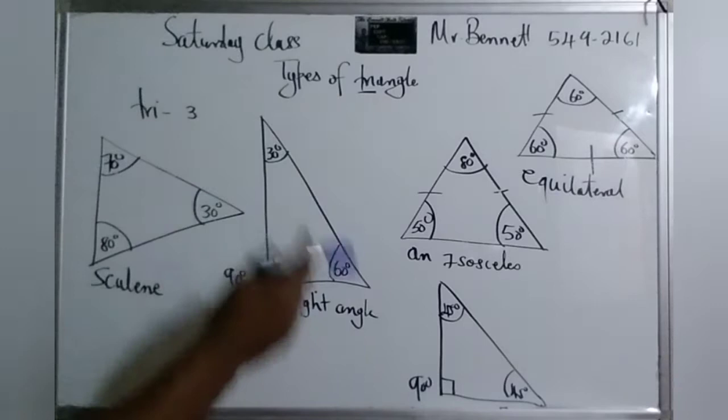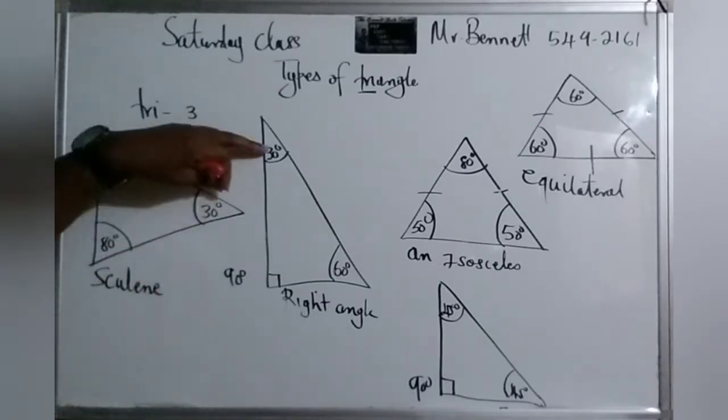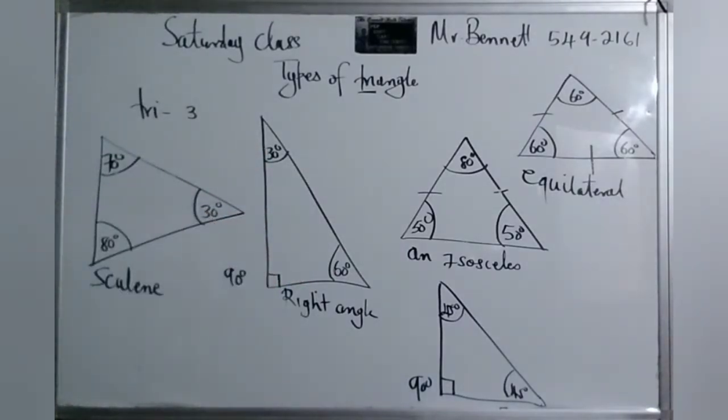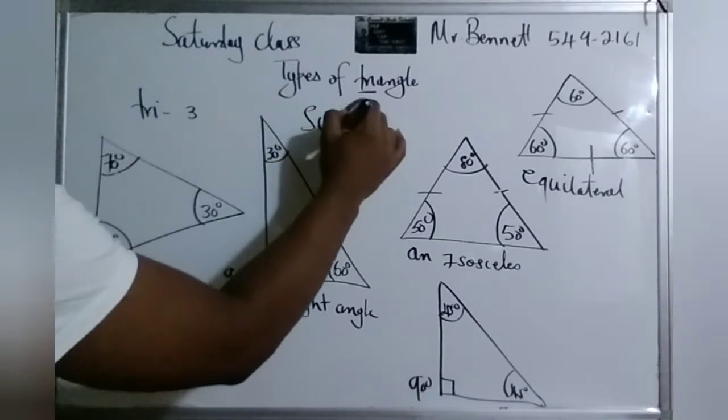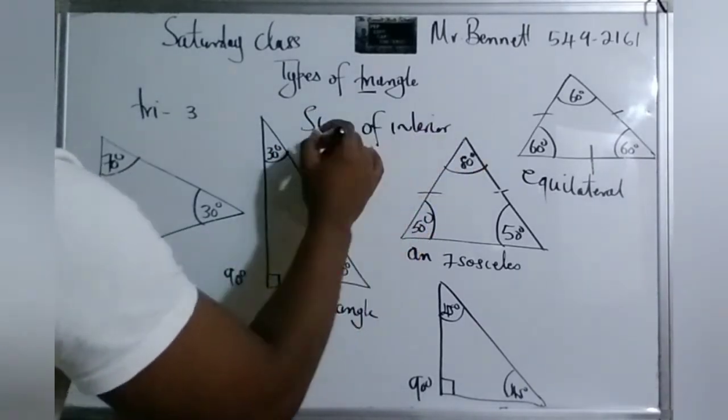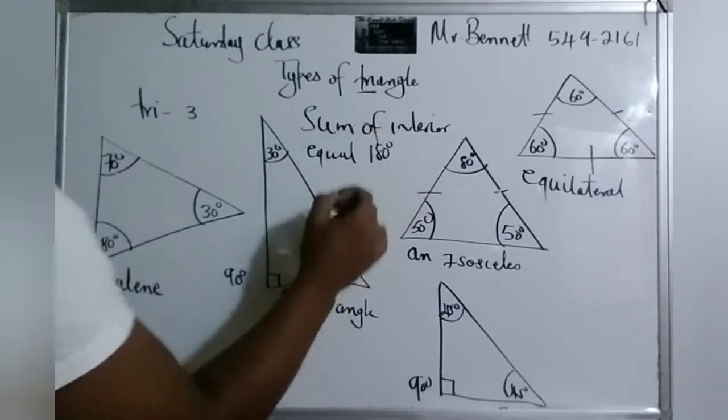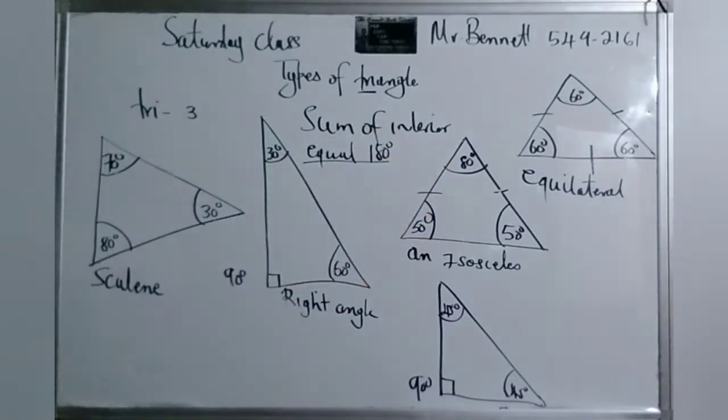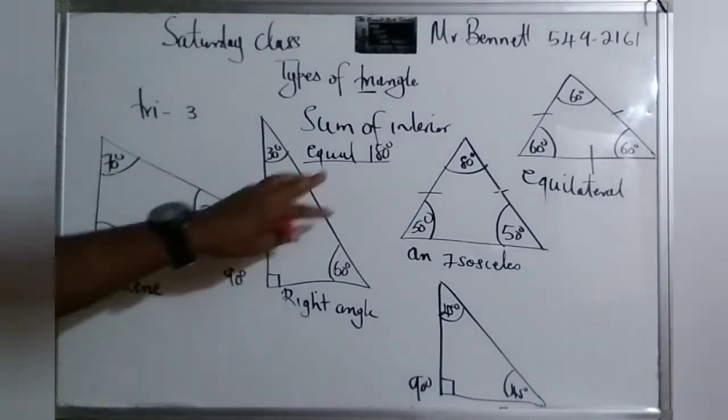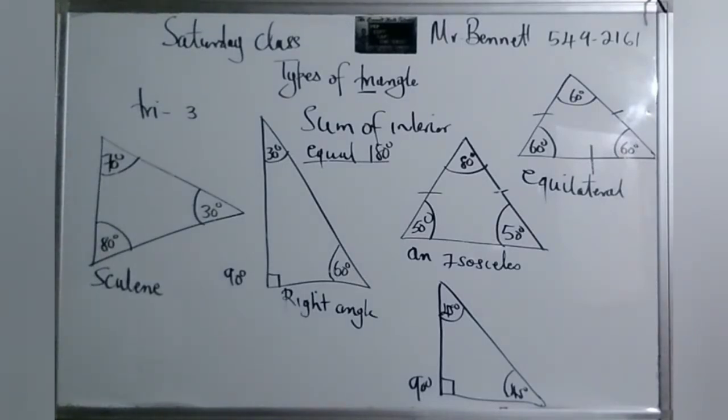So if you notice, if you add all these three angles that we are giving. If you notice closely, the total would sum up to 180 degrees, right? You realize? Yeah. So all triangles, no matter which type, the sum of the interior angles, or all of the inside angles, you will get 180 degrees.